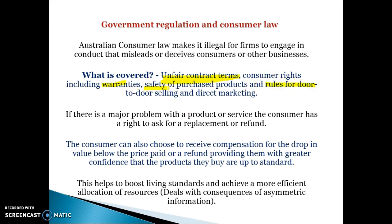Door-to-door selling rules are really important. For example, if you're selling energy or electricity, you can't sell to people not capable of making rational decisions — very elderly people or those with an intellectual disability — because those people are more likely to suffer due to their lack of information and are easier to take advantage of. Warranties cover people: if there's a major problem, you're entitled to a refund. Consumers can also receive compensation if the product is below the value it's made out to be, and all these things try to reduce the problems of adverse selection and boost living standards.